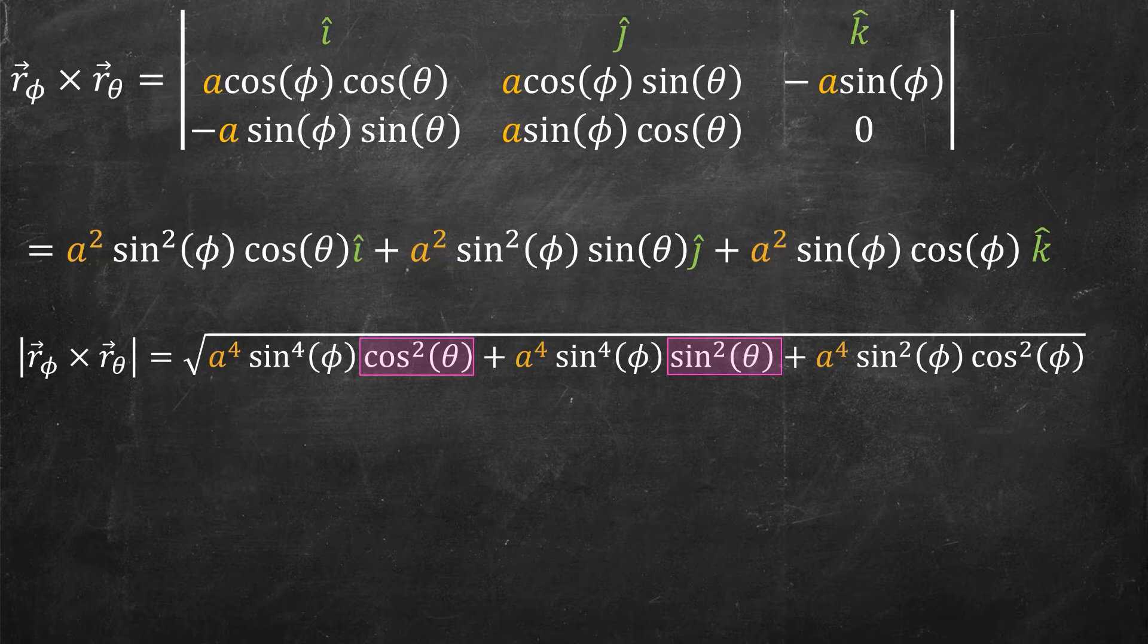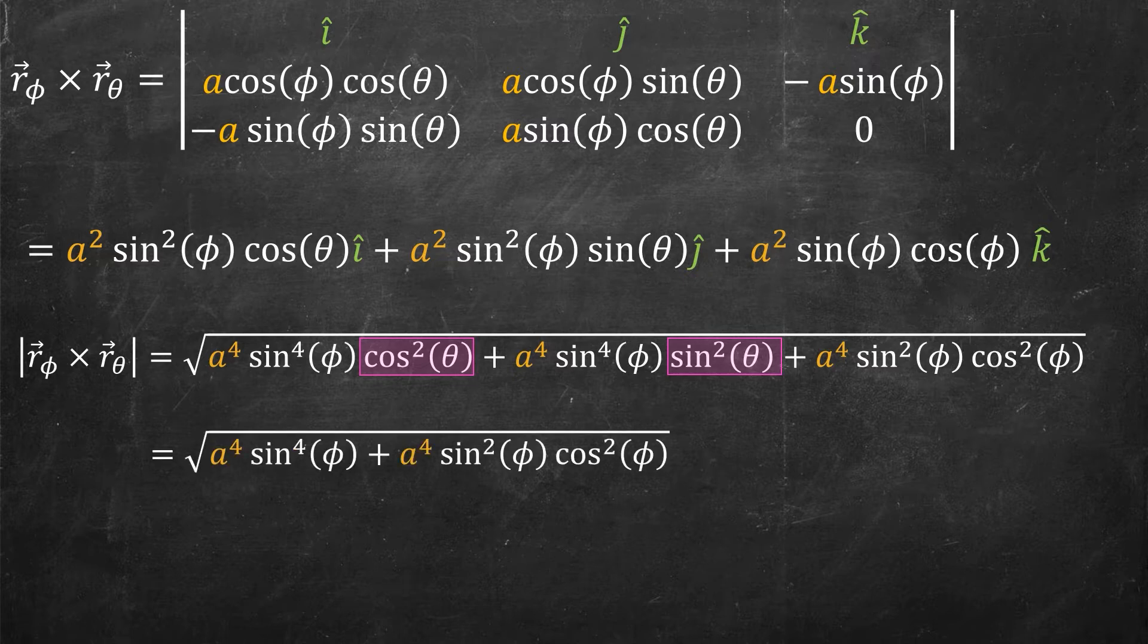They have a⁴sin⁴φ in front of both of them, so I can use Pythagoras here. This simplifies down to just being the a⁴sin⁴φ times one, that's cos² + sin² = 1, and then plus the final term.